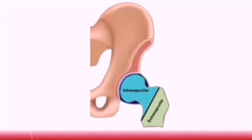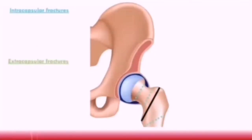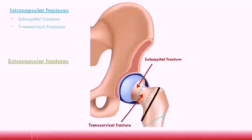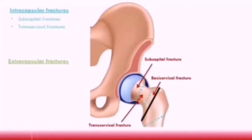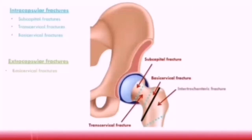We can further classify the location of hip fractures by sectioning the hip into different areas. A fracture in the subcapital area is called a subcapital fracture; one in the transcervical area is called a transcervical fracture. Both subcapital and transcervical fractures are intracapsular. A basicervical fracture is located very close to the edge of the joint capsule, so it can be either intracapsular or extracapsular. An intertrochanteric fracture occurs between the greater and lesser trochanters and is extracapsular. A subtrochanteric fracture occurs below the lesser trochanter and is also extracapsular.